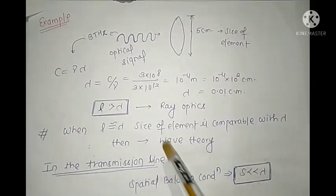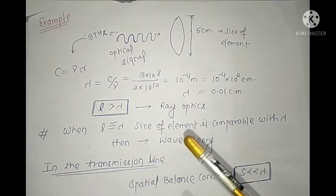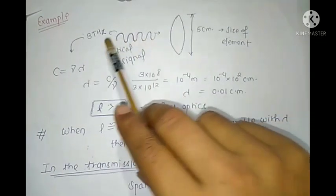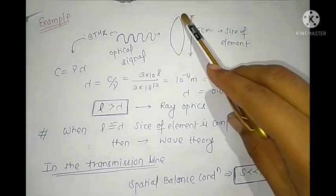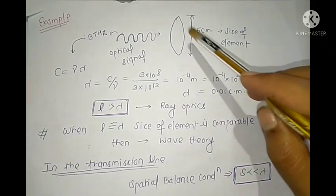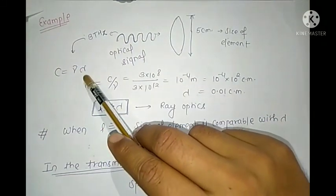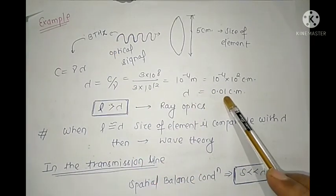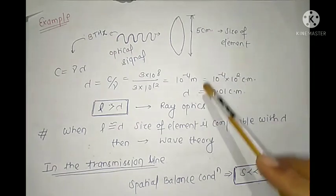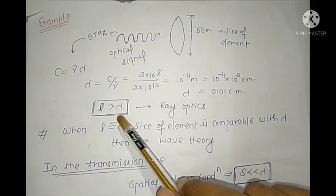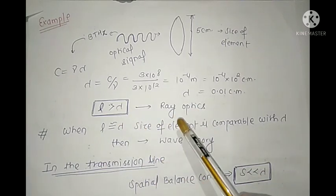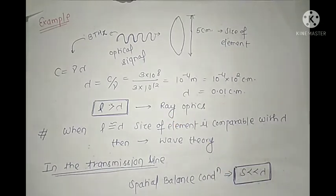Now take another situation — an optical signal. The frequency of an optical signal is in the range of terahertz. Consider an optical signal at 3 terahertz with a lens of size 5 cm. Calculate the operating wavelength using the equation: the result is 0.01 cm. Comparing the size of the element with the operating wavelength — the size of element is greater than lambda — so you use ray optics in this regime.